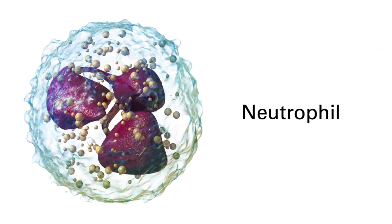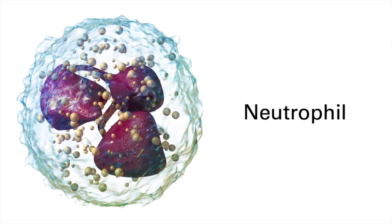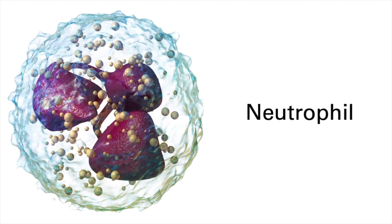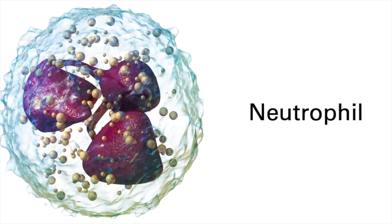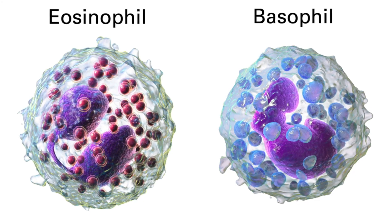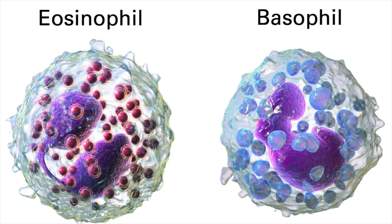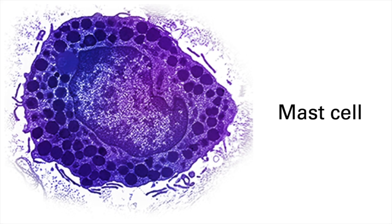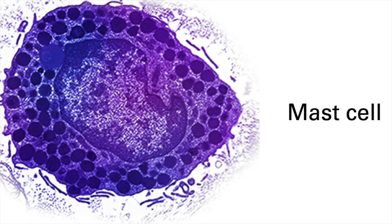Neutrophils are the most abundant white blood cell or leukocyte and are the first immune cell to migrate from the circulation to the site of damage or infection. They are a phagocytic cell, which means they can engulf pathogens, infected or damaged cells, or cellular debris to help contain an infection or remove damaged tissue. Eosinophils and basophils are much less common, but play important roles in producing cytokines to help shape the inflammatory immune response. Mast cells, which are tissue resident cells, are a bit like basophils but lack a multi-lobed nucleus, though they do contain cytoplasmic granules.